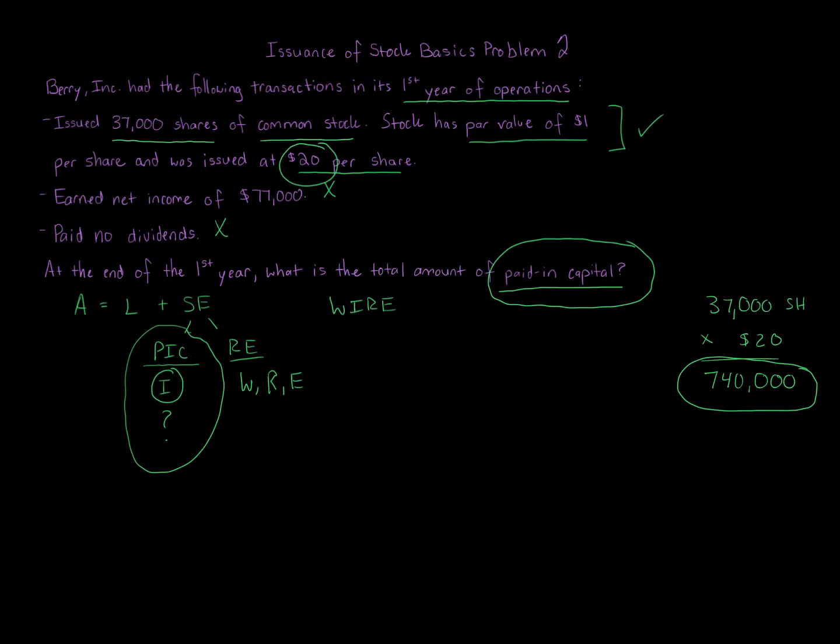Again, please make sure you go through this. Seven hundred forty thousand is the correct answer. It is not the excess. It is not nineteen dollars times thirty seven thousand shares. That would be if I'm asking you for what is the total amount of paid-in capital in excess of par for common stock.